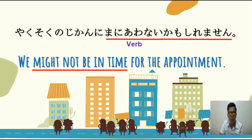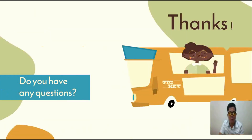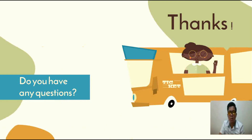So possibly, hindi tayo aabot sa tamang oras. Yun po yung ibig sabihin at tamang gamit ng Kamo Shirimasen in a sentence. Take note, Minasang: si Desho at Kamo Shirimasen ay halos magkapareho — pareho sila ng meaning na 'possible'. But compared to Desho, si Kamo Shirimasen ay yung certainty na pwedeng mangyari ang isang bagay ay much lower. Yung percentage na pwedeng mangyari ay mas konti compared to Desho.